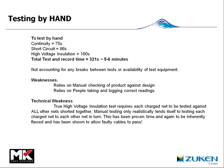In summary, looking at the manual testing of this harness, we've taken approximately 6 minutes, not taking into account any failures, breaks in the testing process, or availability of test equipment. It's a very simple harness, but the same would be true of any size. By acknowledging that we need to test, we recognise people can make mistakes in building a harness — and those mistakes are just as likely in manual testing, where human error in transcribing results could lead to an incorrect pass or fail. True high voltage testing requires each charged net to be tested against all others shorted together, but manual testing only realistically tests each net against each other net in turn, which has been proven to be inherently flawed and has been shown to allow faulty cables to pass.